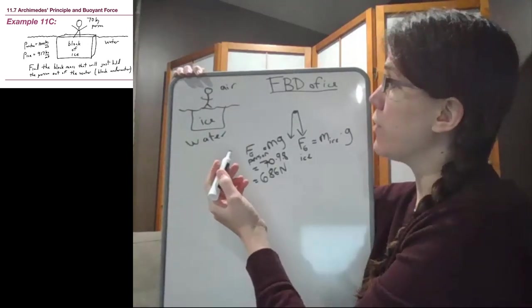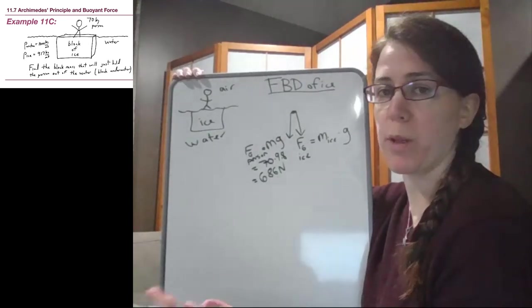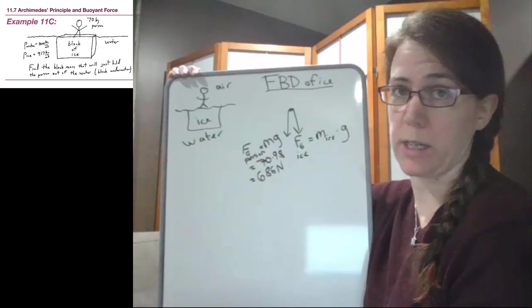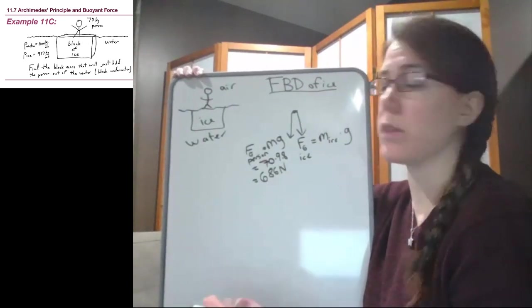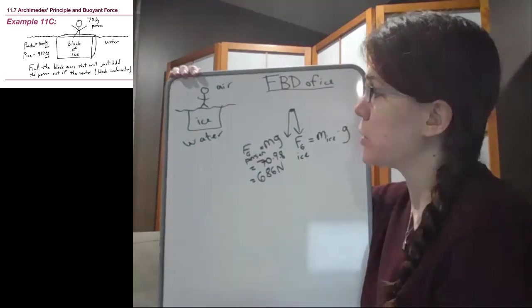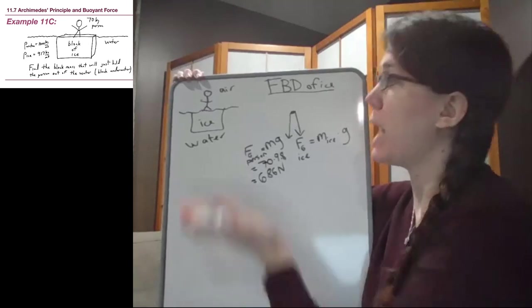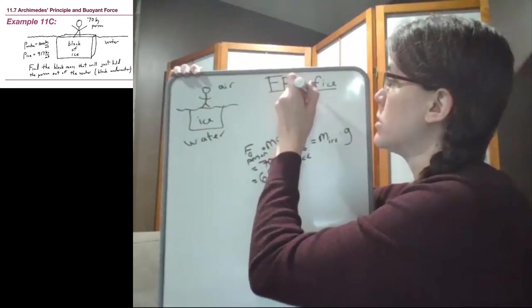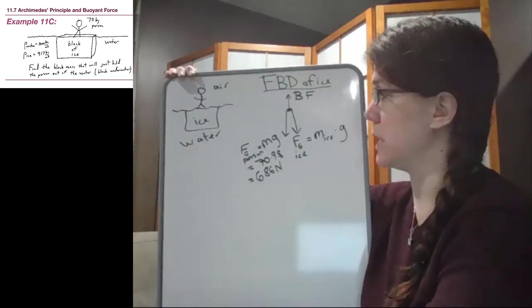And then if we thought about this as a chapter 4 problem, that would be the only things that we could consider from our chapter 4 understanding. But we have added our knowledge now in chapter 11 that when we have objects in a fluid, like water, the buoyant force is able to push back up on the ice and is pushing upwards to be able to balance both of those weights together.